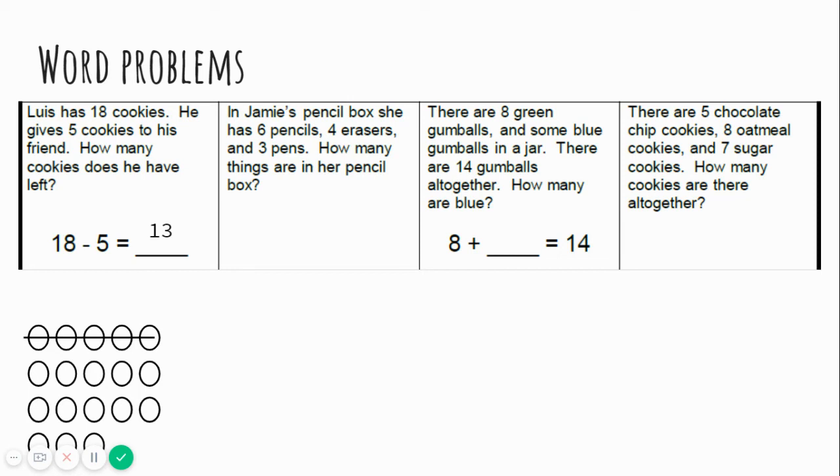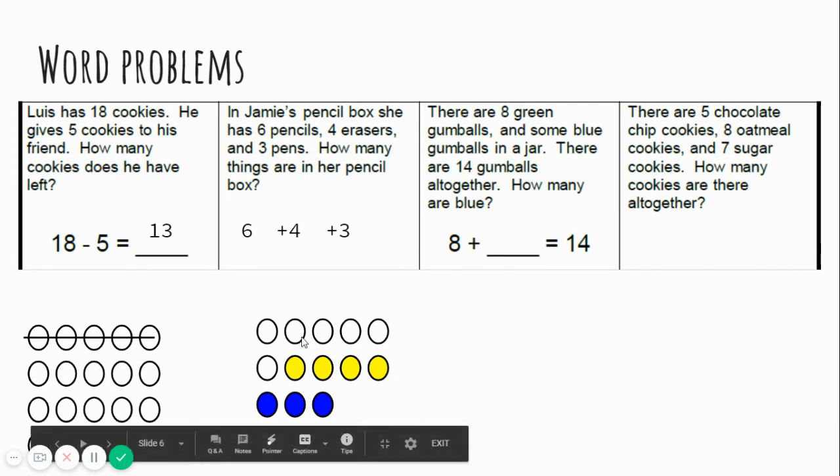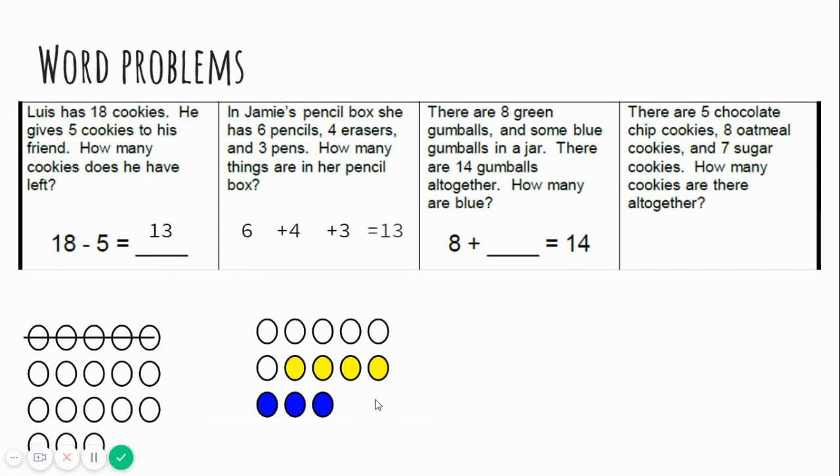Let's look at the second one. In Jamie's pencil box, she has six pencils, four erasers, and three pens. How many things are in her pencil box? Six pencils, four erasers, and three pens. Hmm, we see that six and four make ten, and ten, three is thirteen. Jamie has thirteen items in her pencil box.